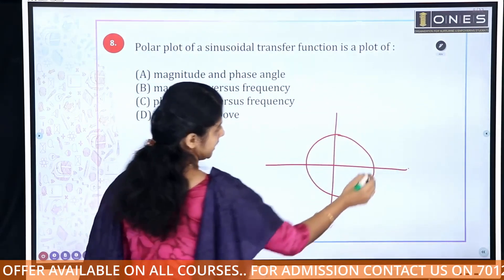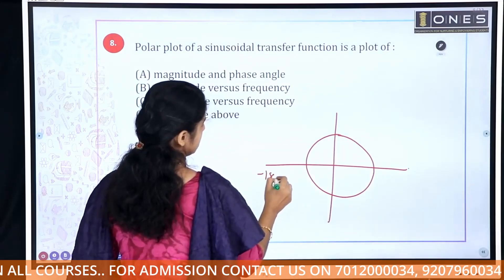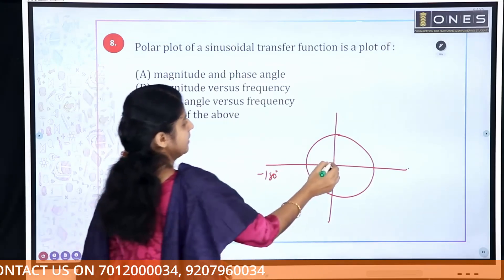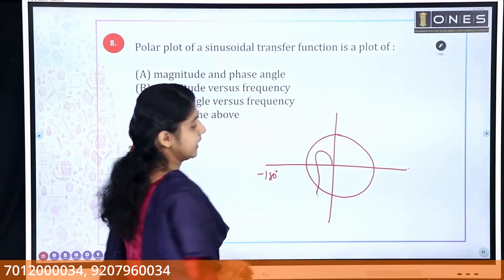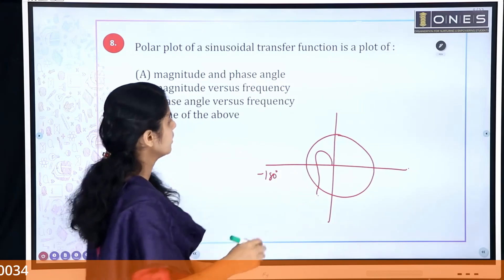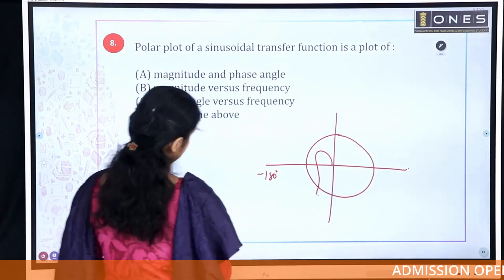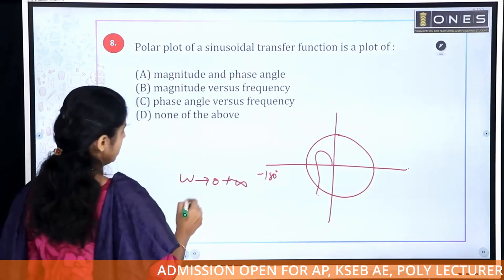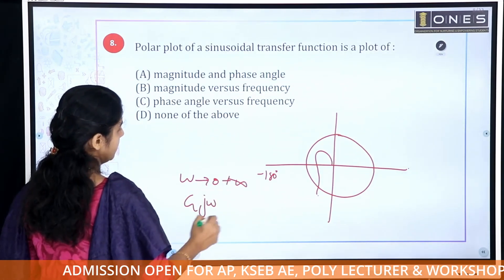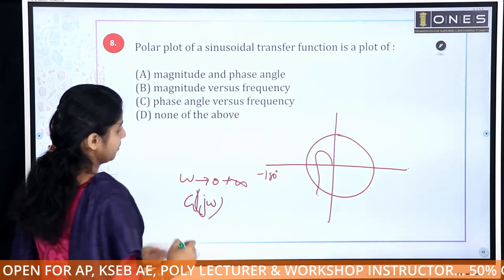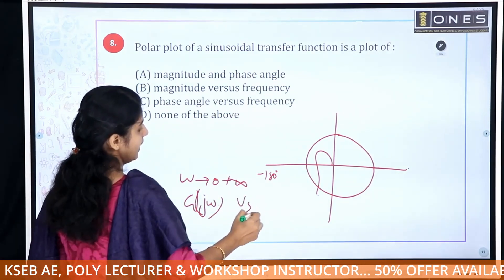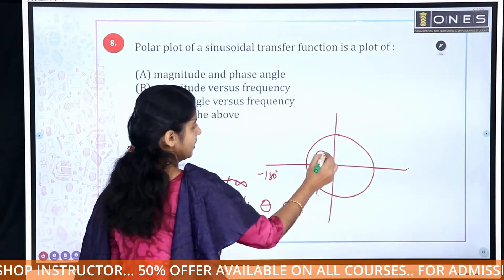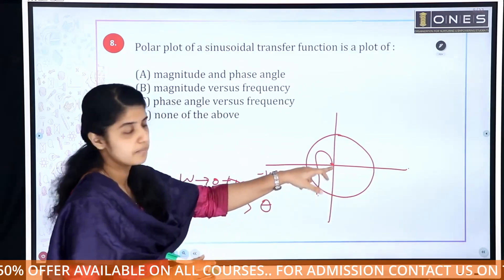This is the X-axis, and this represents the 180-degree direction. When working with a polar plot, we work with omega from 0 to infinity, and we use G(jω) versus the phase angle theta. At each point we have a magnitude, and G(jω) represents that magnitude.